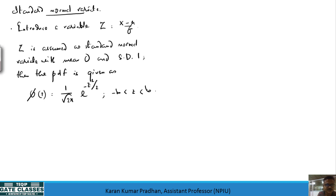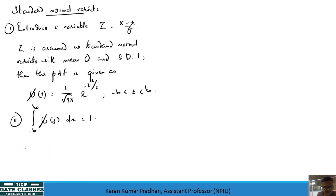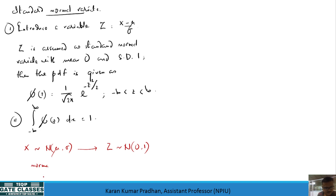Integrating this standard normal PDF from negative infinity to infinity gives 1. To summarize the transformation: X, which is a normal variate with mean mu and standard deviation sigma, is transformed to Z, a standard normal variate with mean 0 and standard deviation 1.